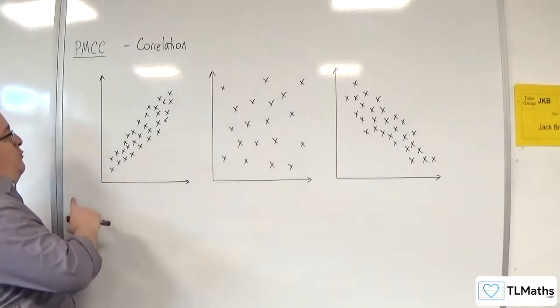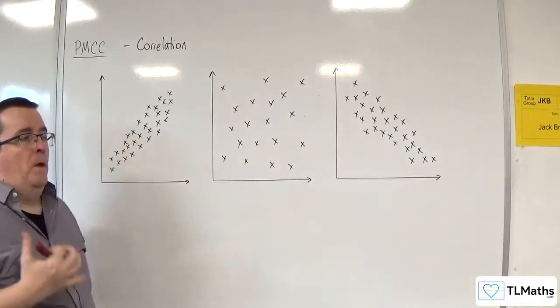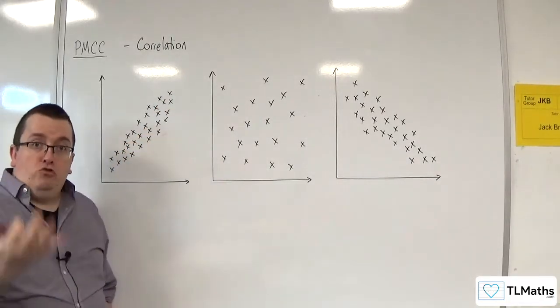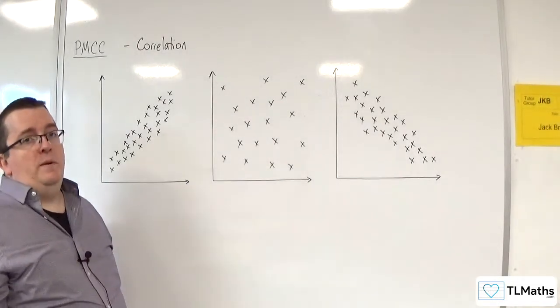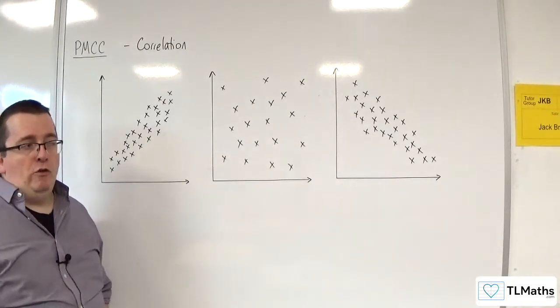So the closer it is to a straight line, the stronger it is, and if it's in a perfect straight line, then we refer to that as perfect correlation.